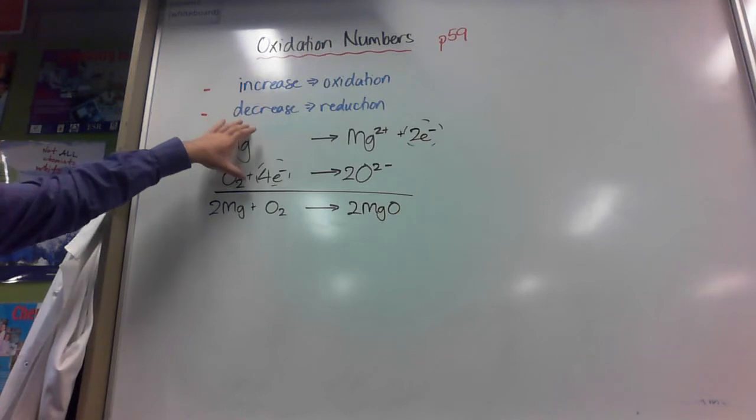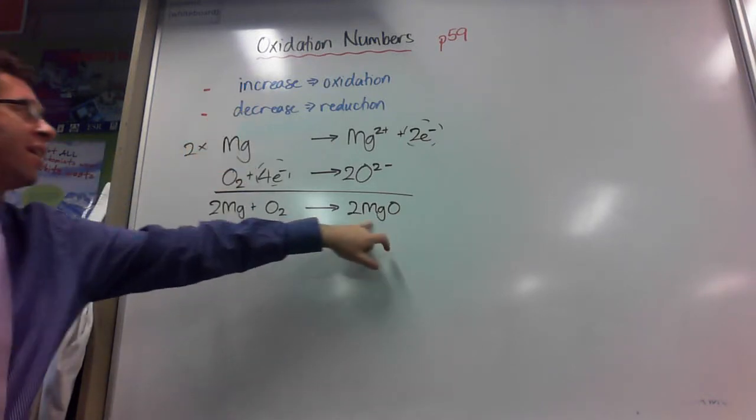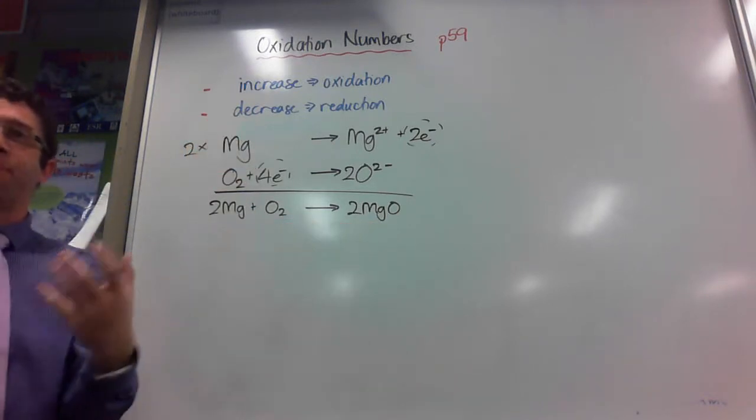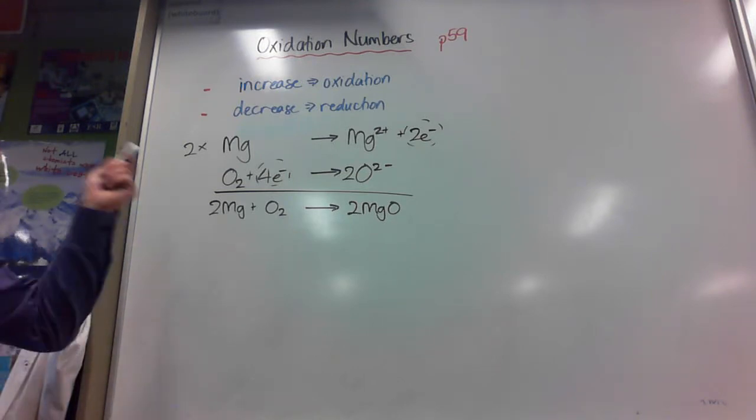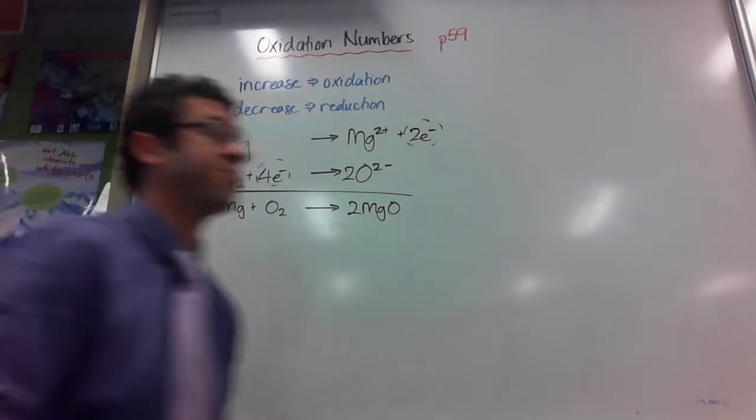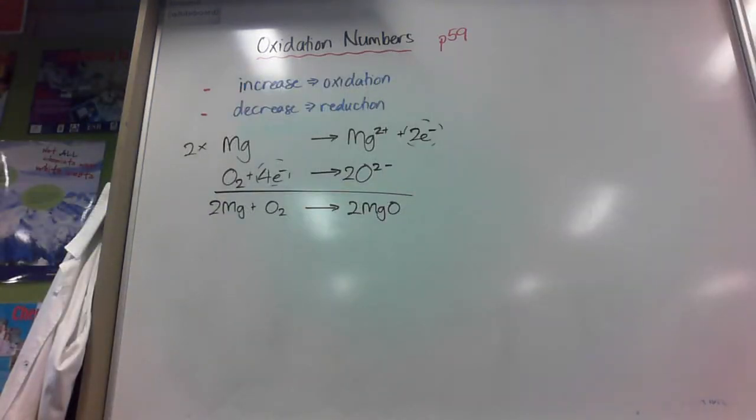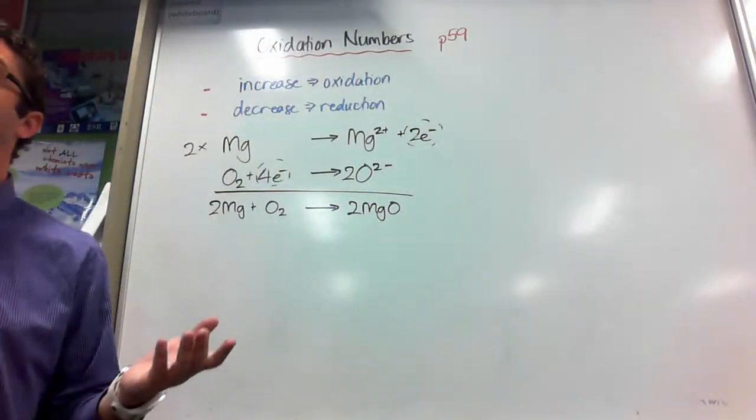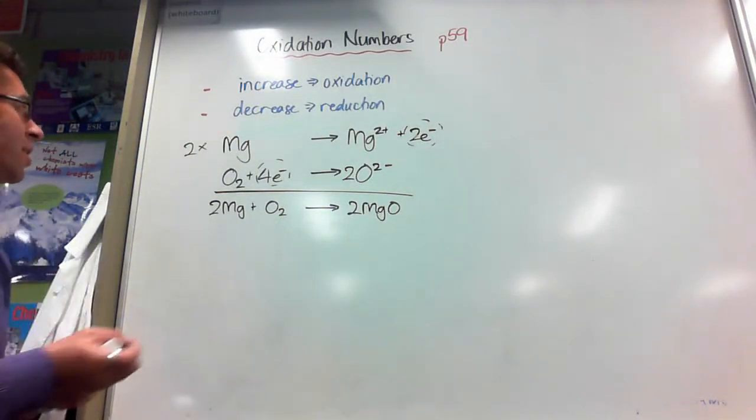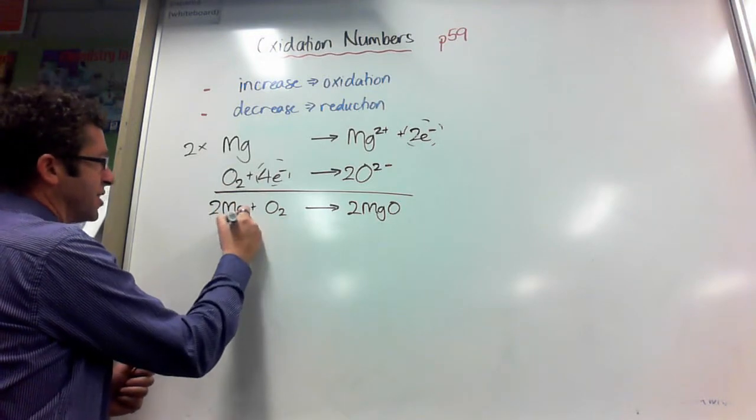Now, often you won't be given the half equations. And it's pretty annoying to break the whole equation, the net equation, up into half equations to work out if it's oxidation or reduction. It's actually an extra step that you don't require. Instead, we use oxidation numbers. And one of the really easy rules with oxidation numbers is the oxidation number of any element is zero.